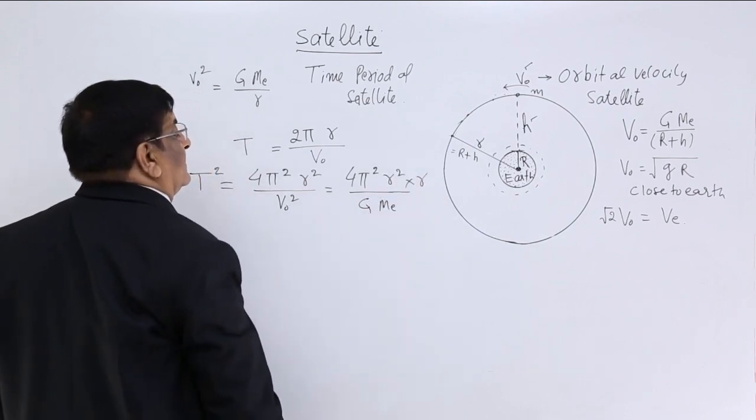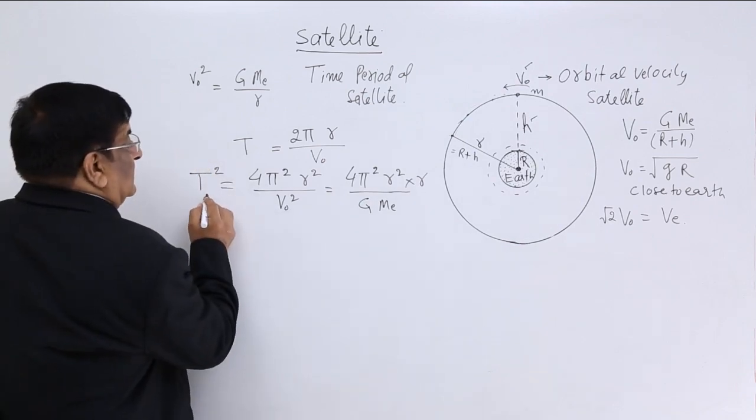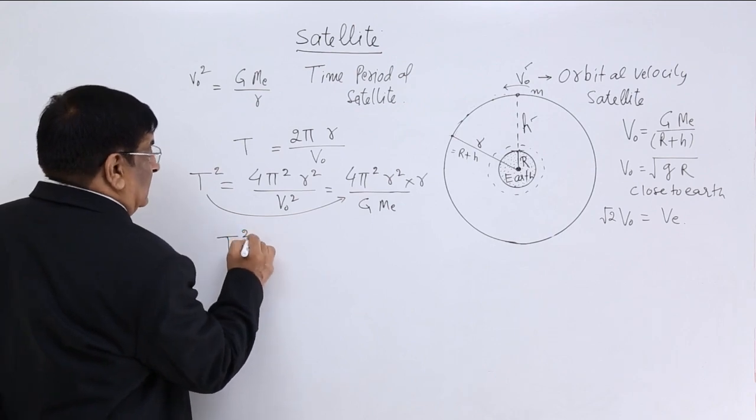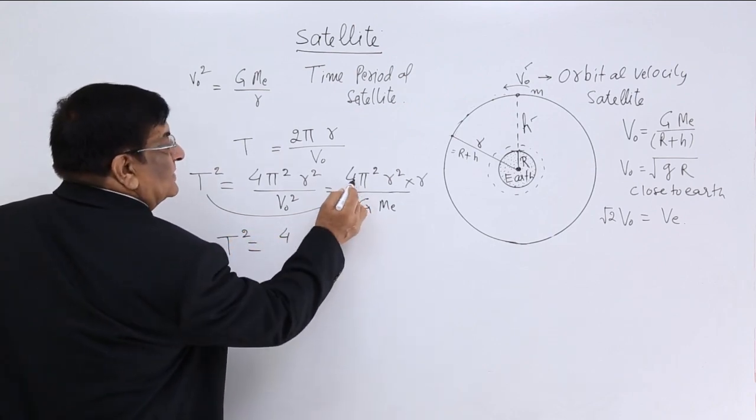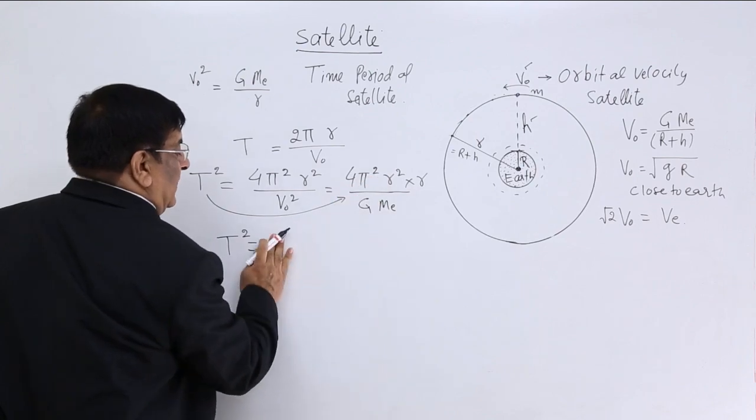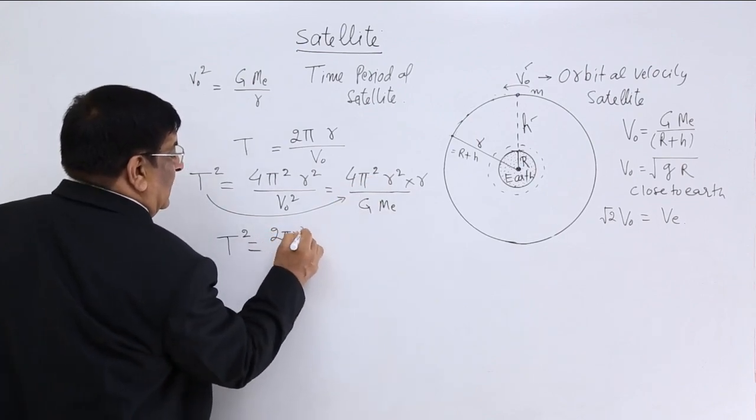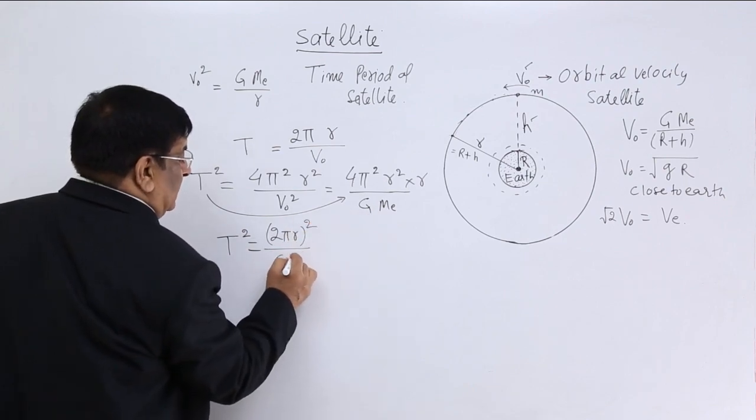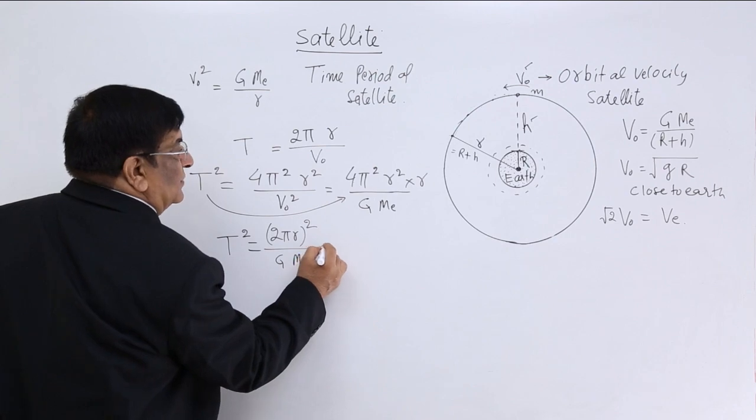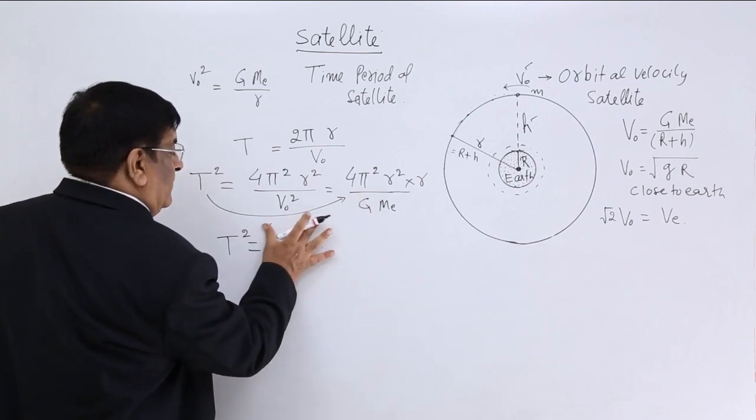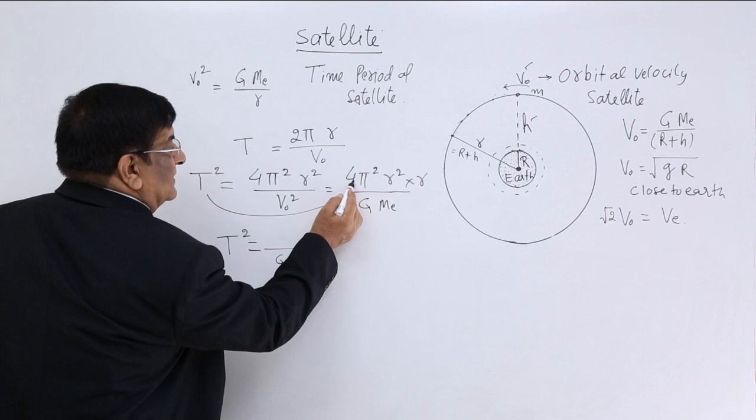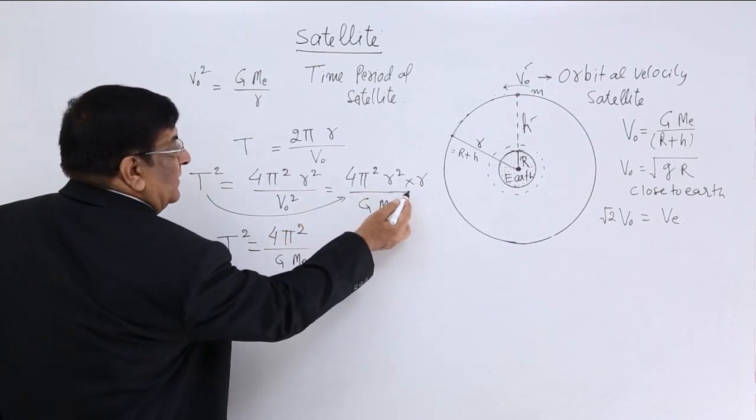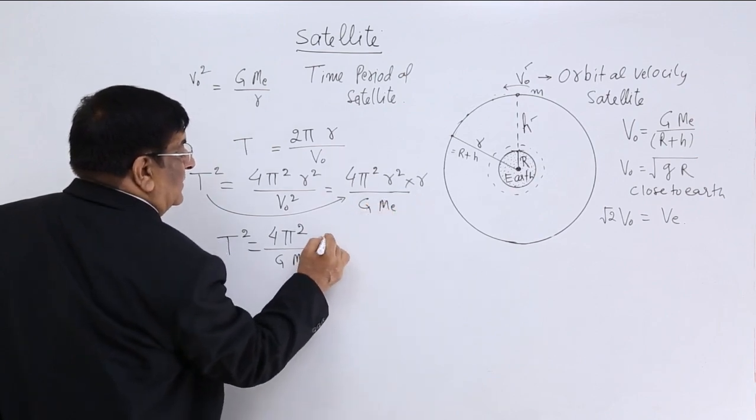4 pi square r square upon v square is equal to g m e upon r, that r will go here. So t square is equal to 4 pi square r square, I will write it simply, 2 pi r square upon g mass of the earth into, 2, no, I will write it this way,